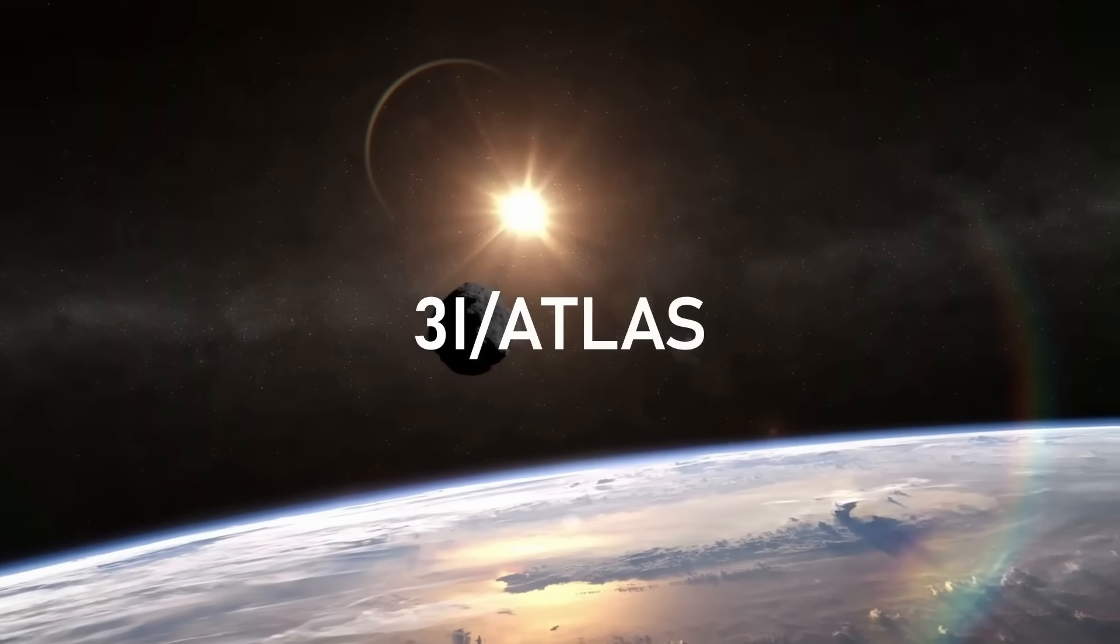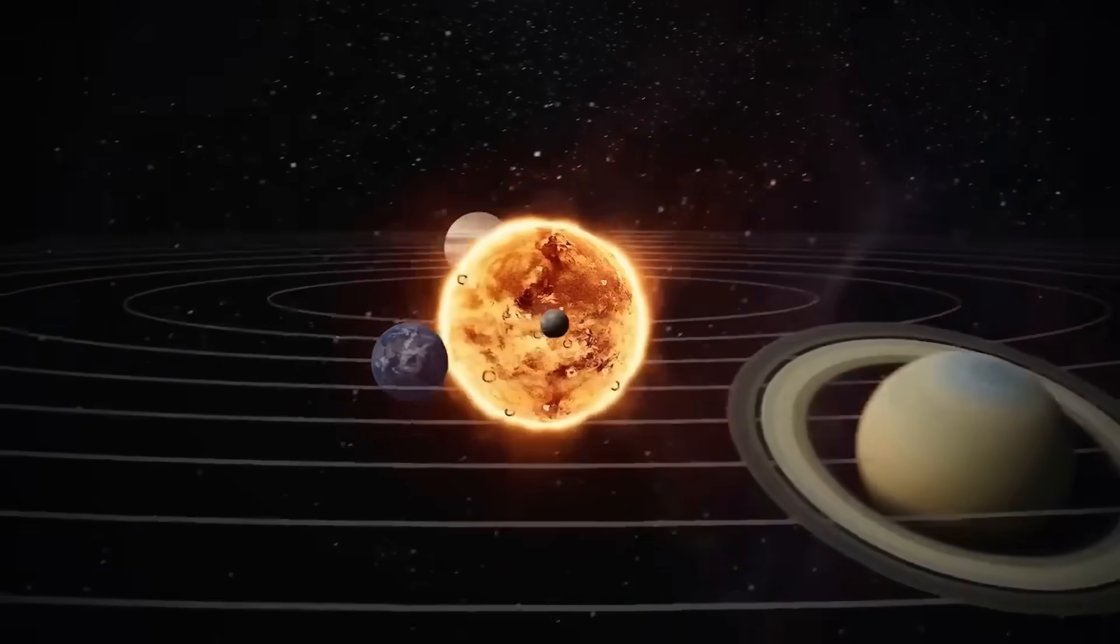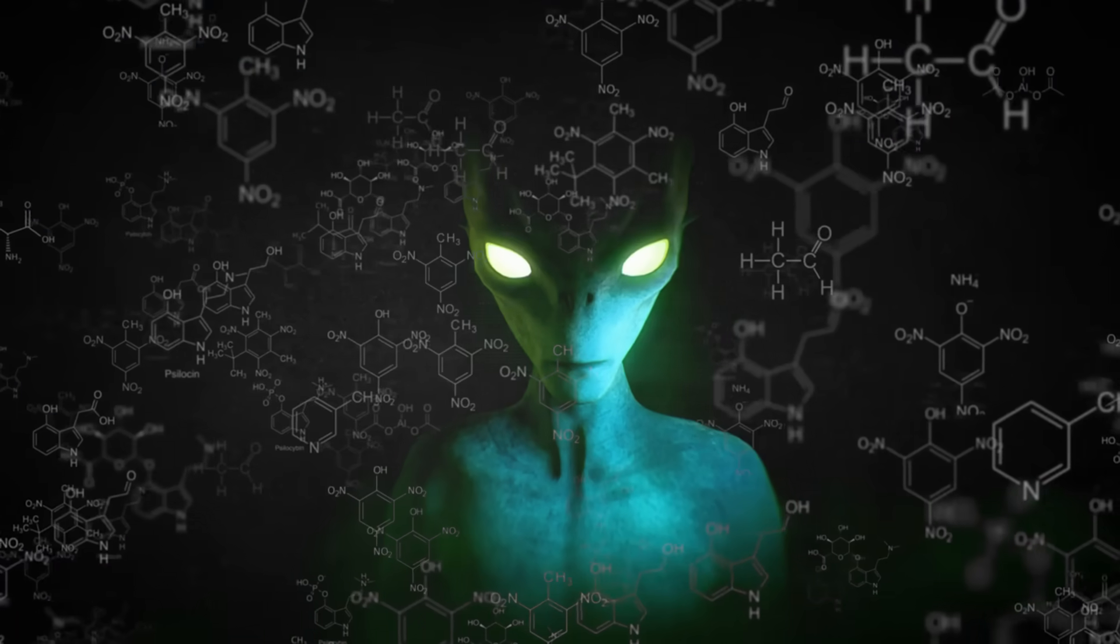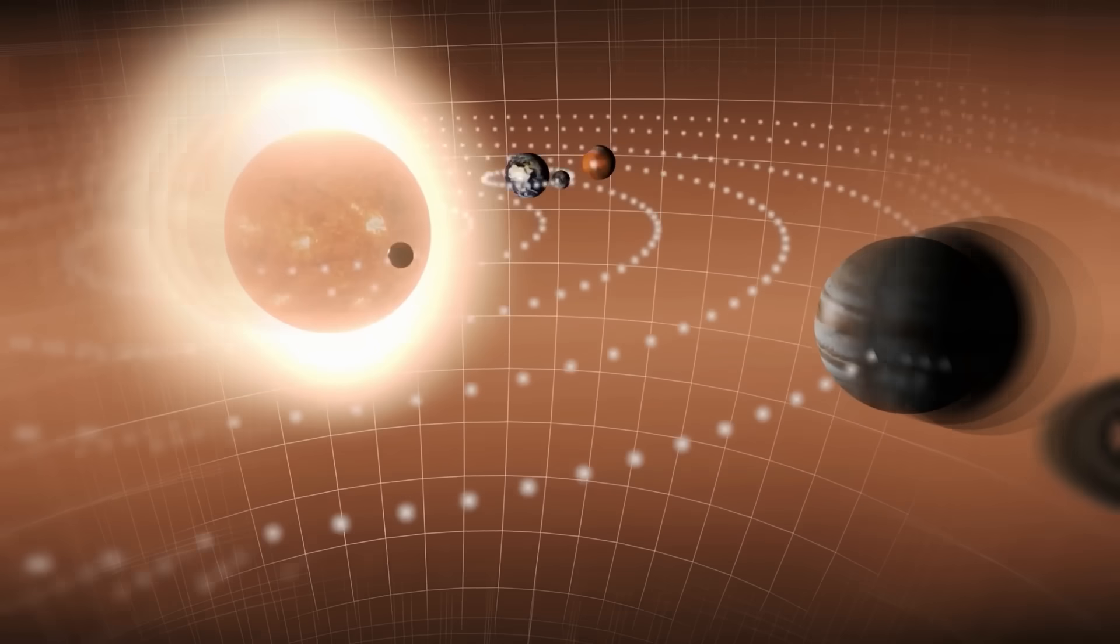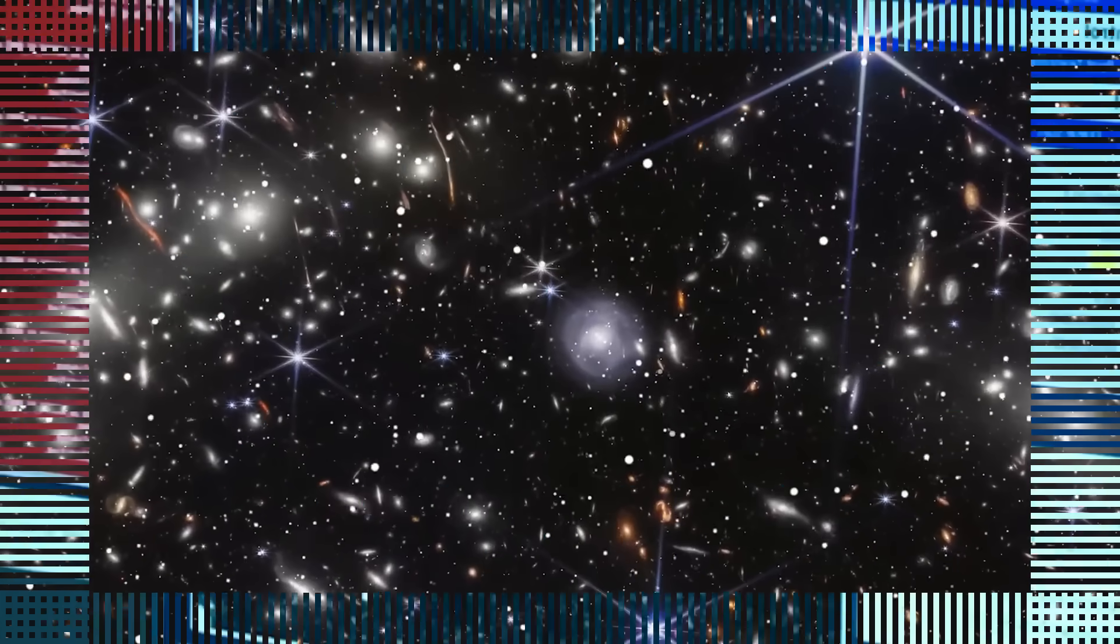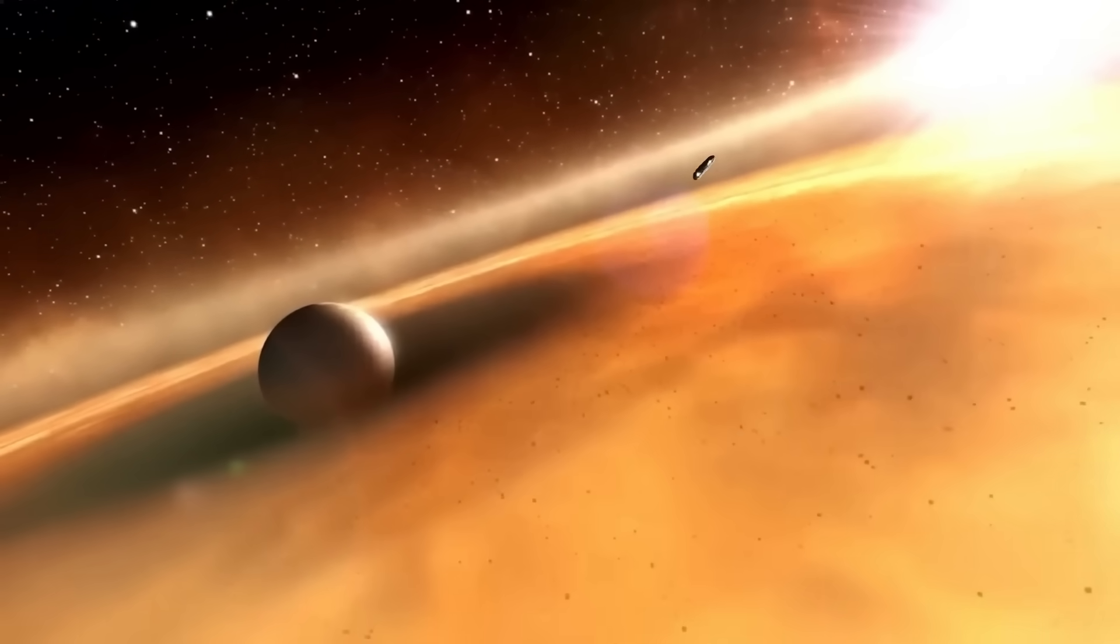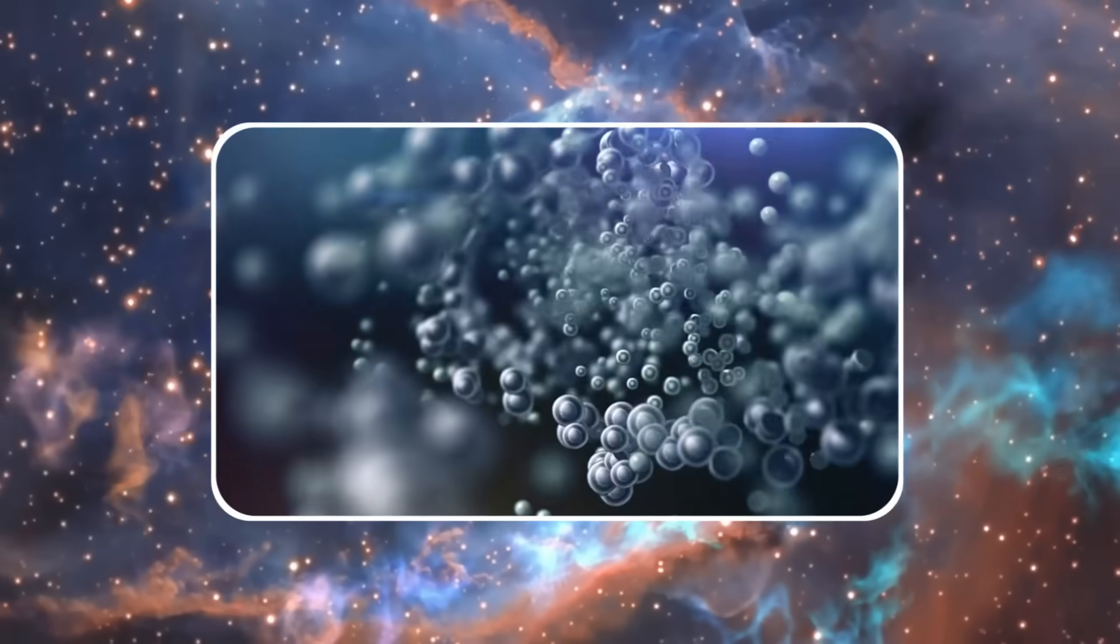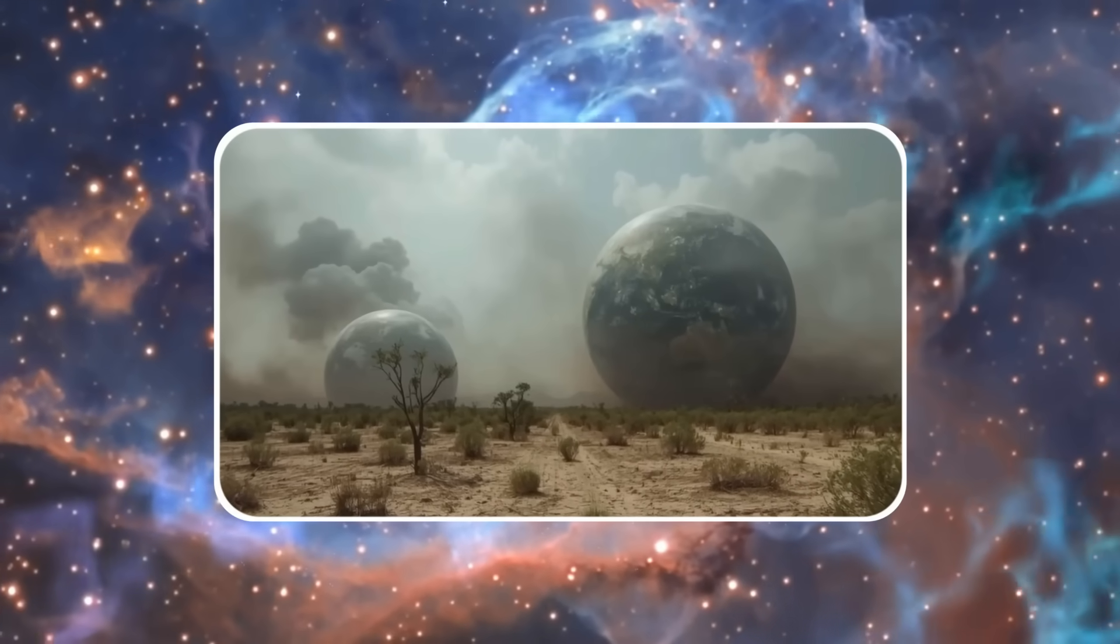Why would anyone risk such a dangerous mission for dust samples? Because 3i/ATLAS could contain isotopic ratios never seen anywhere in our solar system. We're talking about clues to alien chemistry - elements that formed around a different star, under different conditions, billions of years ago. Now think about that for a second: imagine you could hold a piece of matter from another star in your hand. Different atoms, different ratios, stuff older than Earth itself.